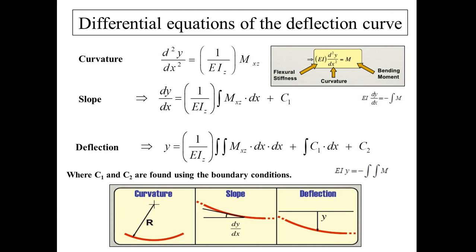These are the differential equations of the deflection curve. The curvature equation is the basic equation: 1/R = M/EI = d²y/dx², where EI is the flexural stiffness. If you integrate this equation once, you get the governing equation for slope. Integrating again — double integration — gives EI·Y = ∬M dx, the governing equation for deflection. Constants C1 and C2 can be found from the boundary conditions.